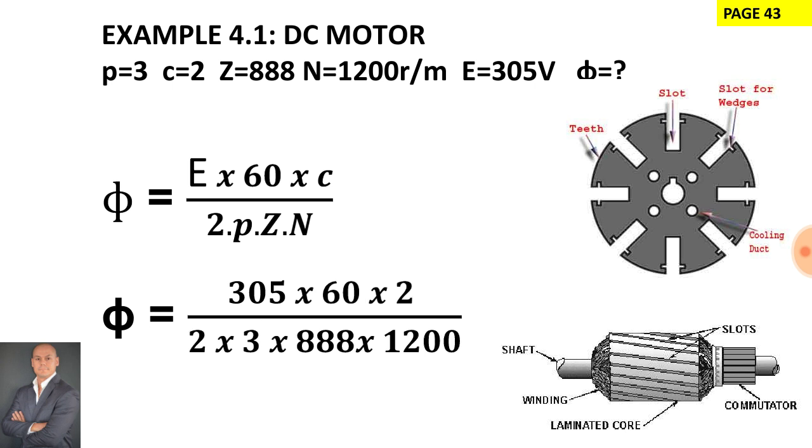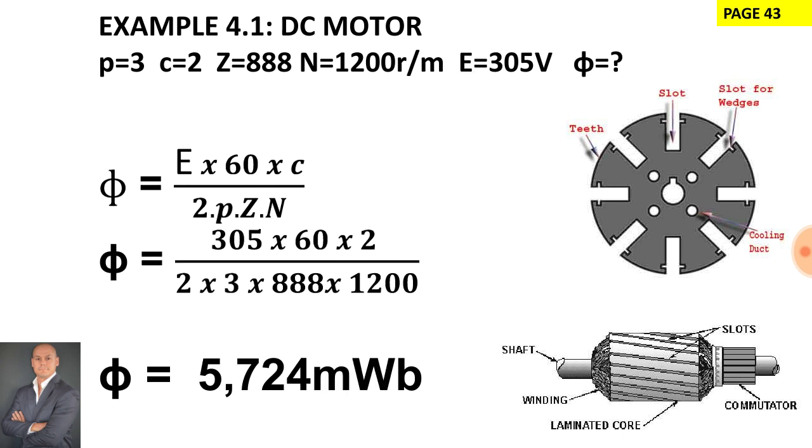Multiply by the speed at which the armature rotates and this gives us a final answer of 5,724 milliweber. Thank you for watching this video.